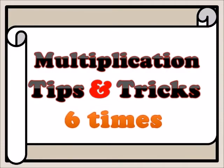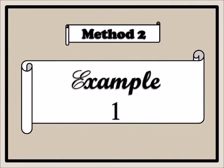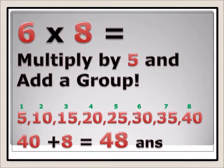Multiplication tips and tricks: six multiplied by five — when you have six times any number, you take the multiples of five and then add that number again to it. Example one: six times eight. You write five, ten, fifteen, twenty, twenty-five, thirty, thirty-five, forty — those are eight multiples of five — and then you add eight to forty, which gives forty-eight. Six times eight equals forty-eight.